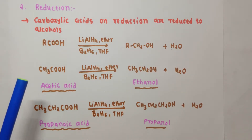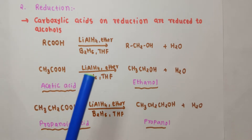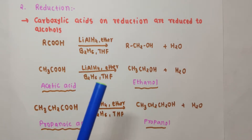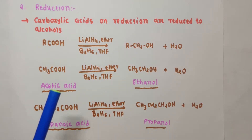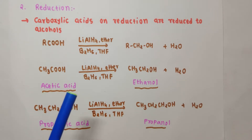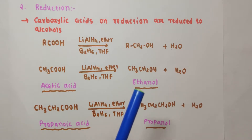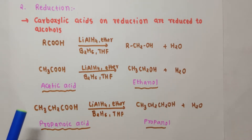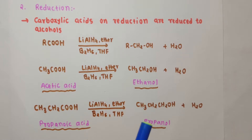For example, if you take acetic acid, upon reduction with a strong reducing agent such as lithium aluminium hydride or diborane, it gives a primary alcohol containing the same number of carbon atoms as in the original carboxylic acid. Acetic acid has two carbon atoms, so you get ethanol plus a water molecule. Similarly, propanoic acid upon reduction gives propanol plus water.